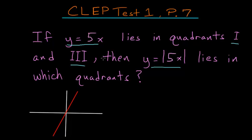And so to answer the question, which quadrants does the absolute value of 5x lie in, we just need to take the absolute value of this function. So for any of the negative values here, the negative x values, we just have to take what's down here and flip it up here.